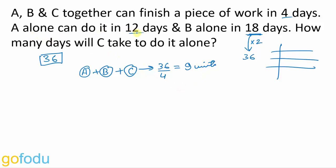A alone can do it in 12 days. So A can do 36 units of work in 12 days. That means in 1 day, A will be doing 36 upon 12, 3 units of work. B alone can do 36 units in 18 days. In 1 day, B will be doing 36 upon 18, 2 units of work.